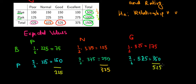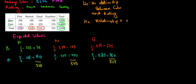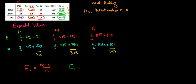To generalize what we just did, the general formula in statistics for the expected value of a certain cell — for instance blue and poor, or blue and normal — is: the row total times the column total divided by the number of observations. These combinations are called cells.